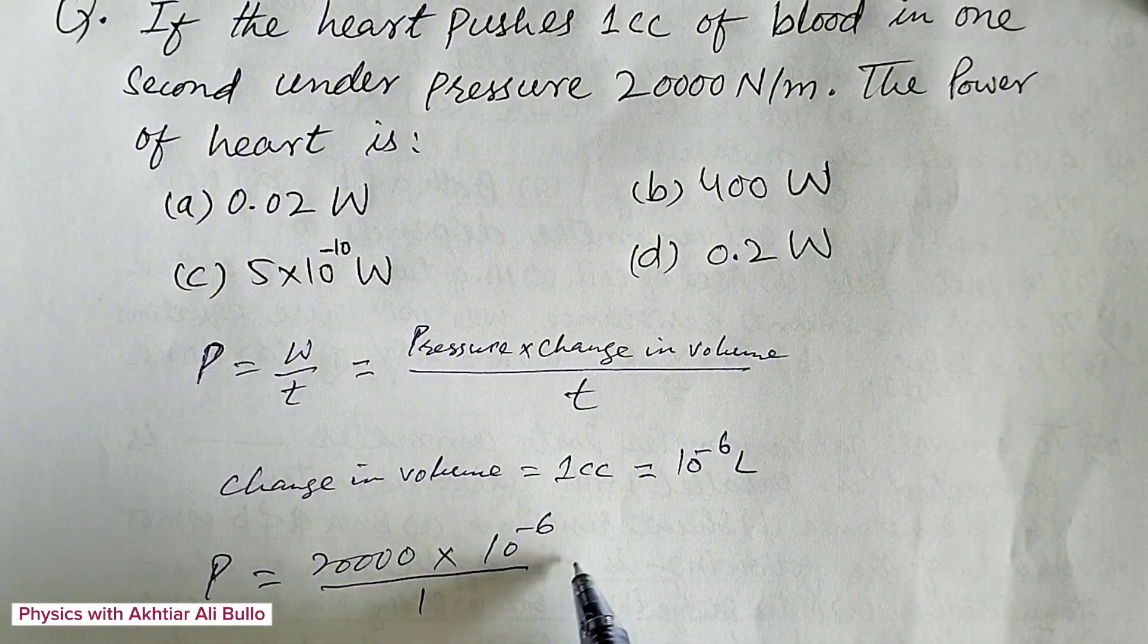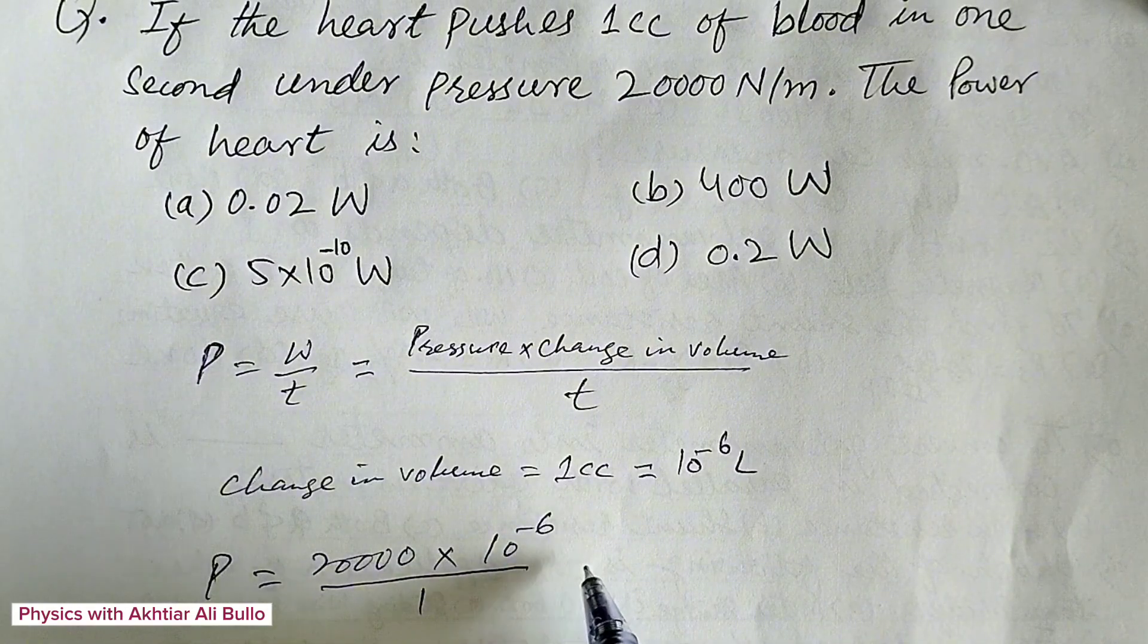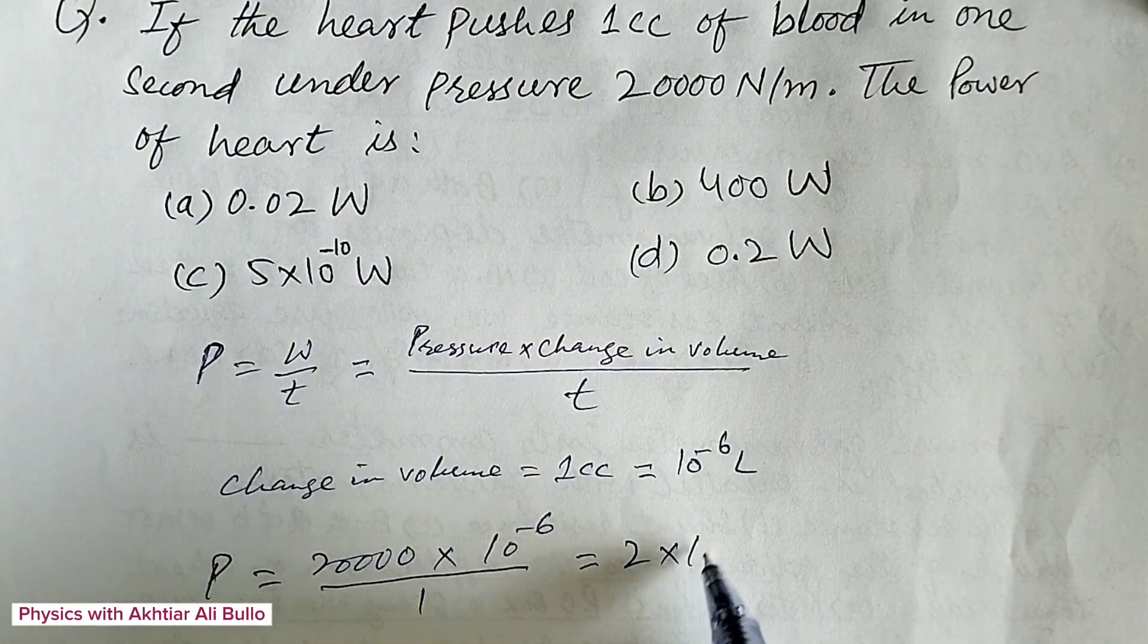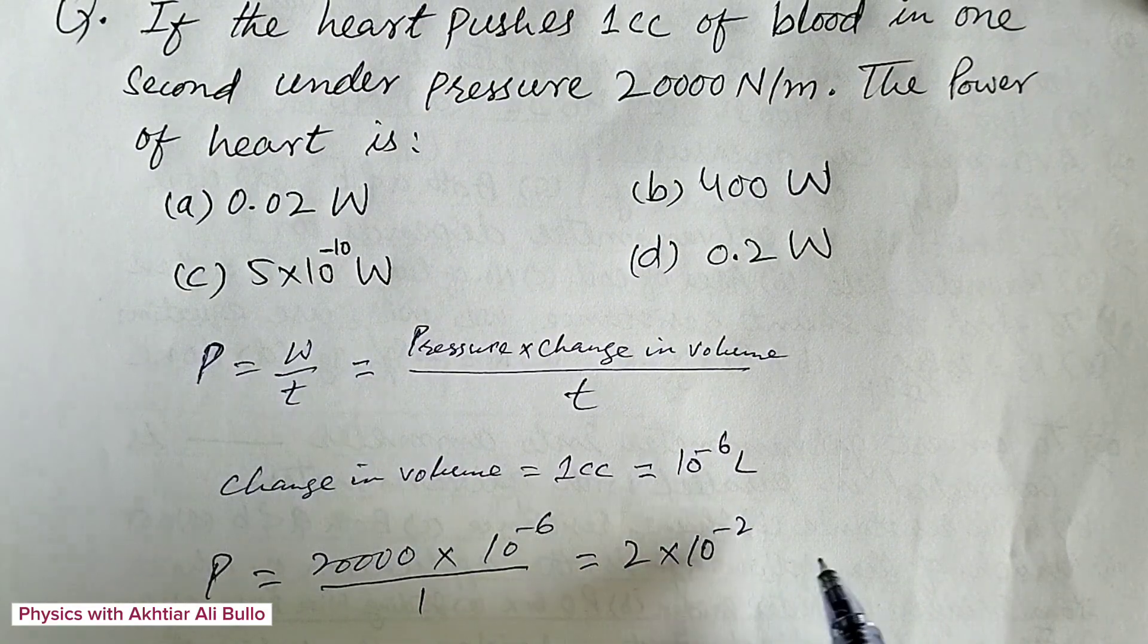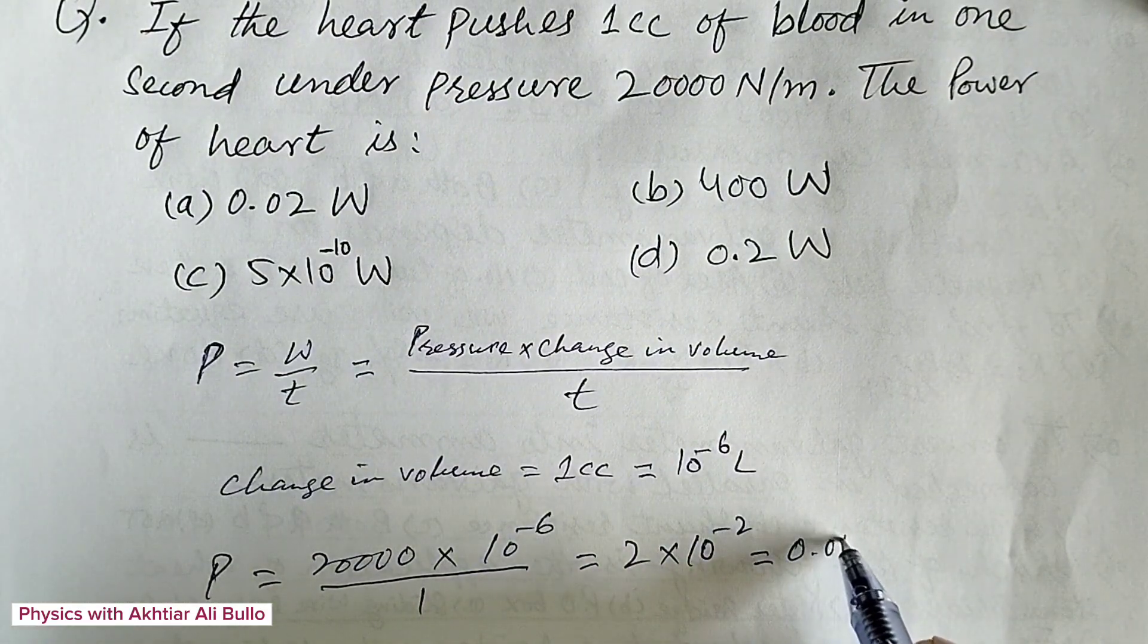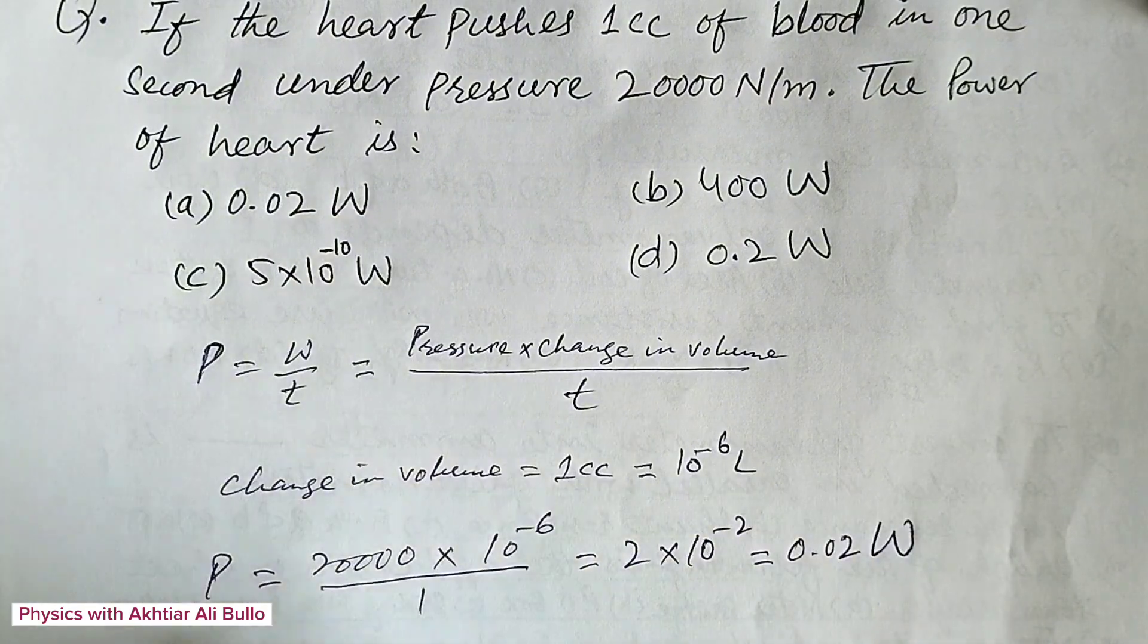After simplification, we will get the answer as 2×10 raised to power minus 2, which is equal to 0.02 Watt.